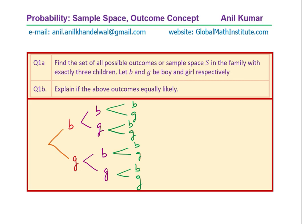Going through the tree diagram: starting with boy — we get BBB, BBG, BGB, BGG. Then starting with girl — GBB, GBG, GGB, and GGG. That is how you get your sample space.